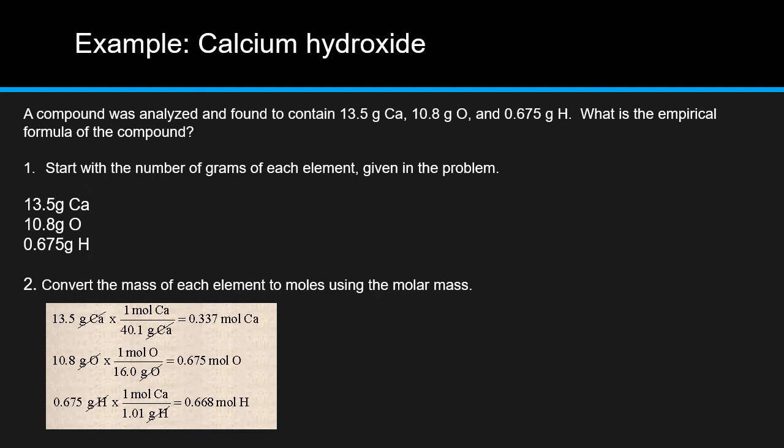So yeah, we've got 0.337 moles for calcium, 0.675 for oxygen, and 0.668 for hydrogen. Okay, so which mole value is the smallest? Yeah, it's definitely calcium. So hang fire, pause, and keep that in mind for the next, for step three.